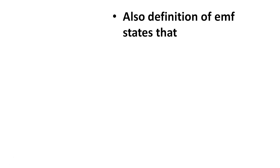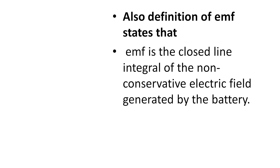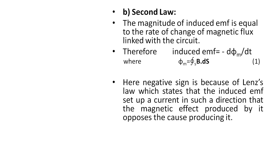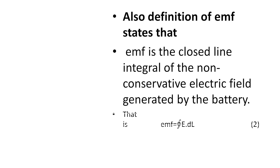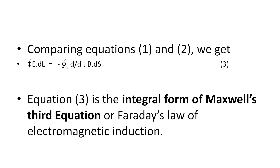By definition, EMF equals the closed line integral of E·dL, where E is the non-conservative electric field. So we have equation 1: EMF = -dφ/dt, and equation 2: EMF = ∮E·dL. Comparing these two equations gives us: ∮E·dL = -d/dt ∫∫B·dS. This is equation 3, the integral form of Maxwell's third equation (Faraday's law of electromagnetic induction).